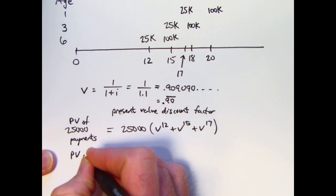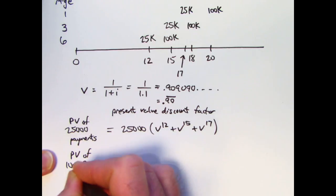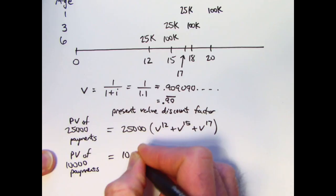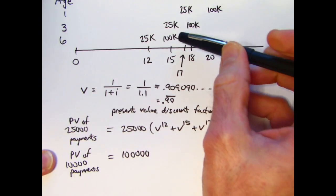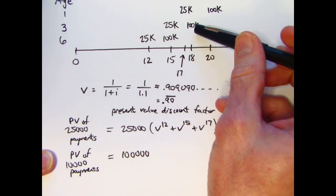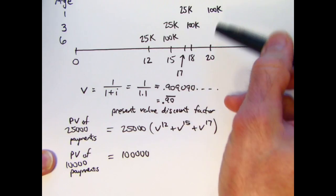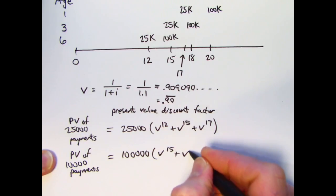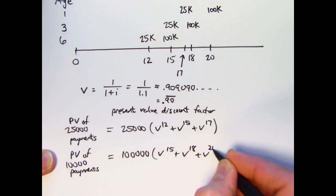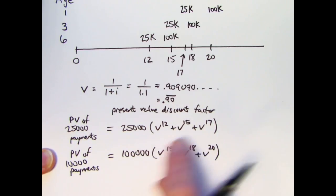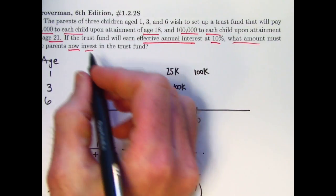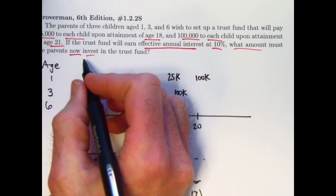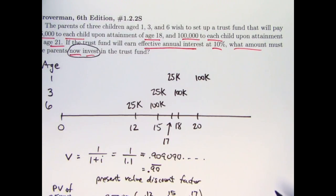How about the 100,000 amount payments? What's their present value? Same concept. Take the 100,000 times V to the 15th, 100,000 times V to the 18th, and 100,000 times V to the 20th. You can factor the 100,000 out. So if I can find this value and this value and then add them together, that will be my final answer for the present value of the entire future payments. It's how much we should invest now.